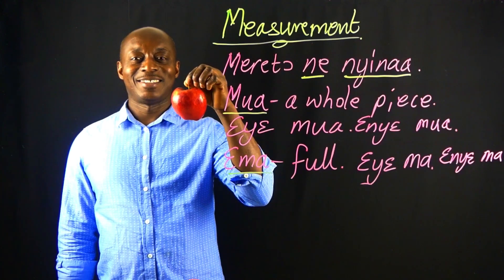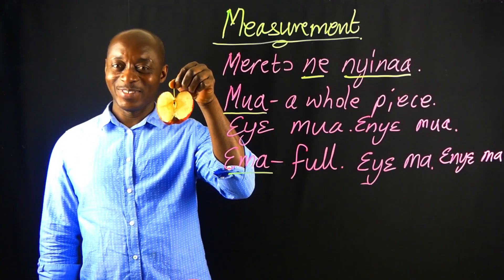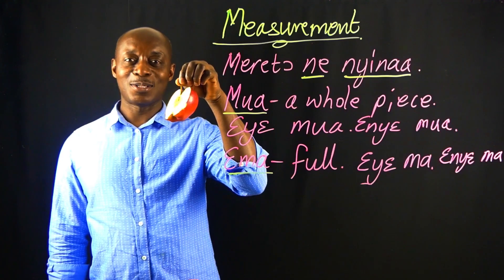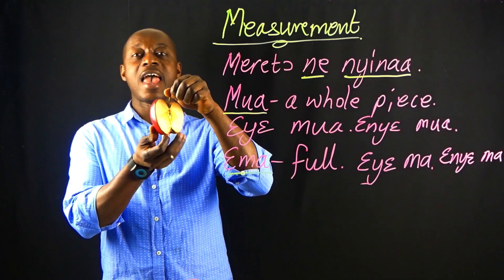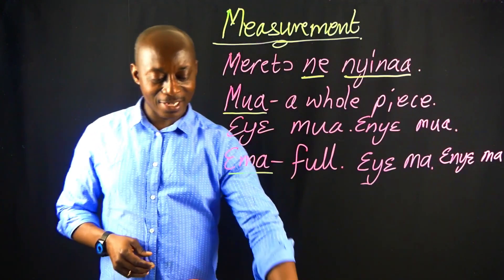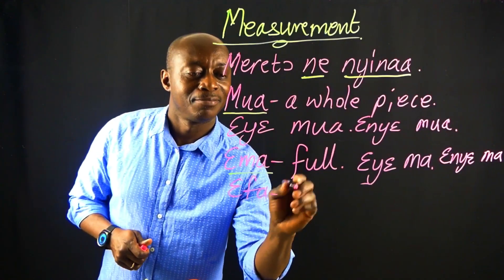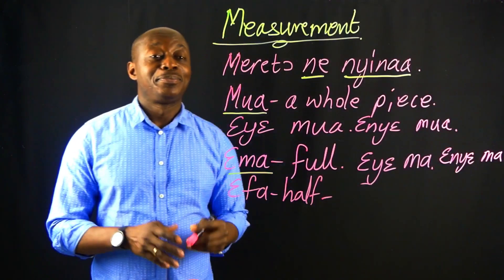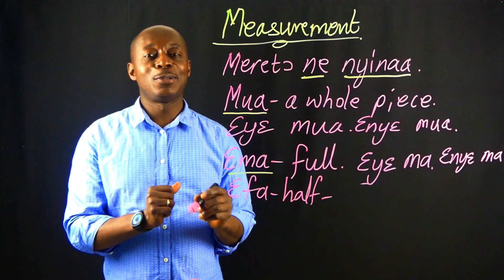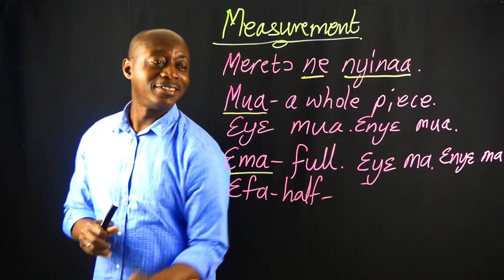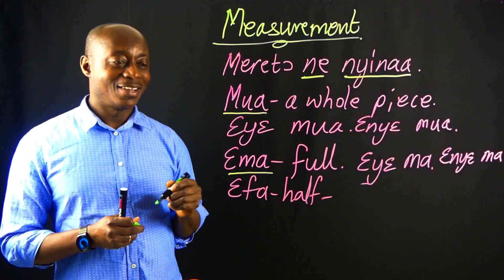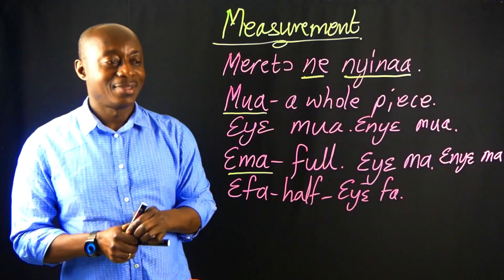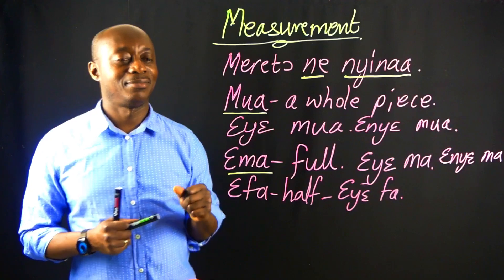Now look at this — is it a whole piece? No, that tells you it is HALF. Not a whole piece. In Twi, how do we say half? We say EFAN. EFAN means half. So if you want to say 'it is half,' you say EYE FAN.